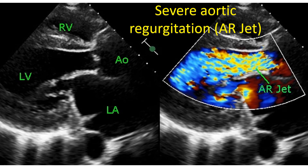The size of the regurgitation orifice can be assessed by the width of the mosaic jet on color Doppler at its origin between the valve leaflets. Sometimes a perforation in the valve leaflet may be causing the regurgitation. This can also be seen as a mosaic jet originating away from the region where the valve leaflets meet, in the belly or base of the valve.